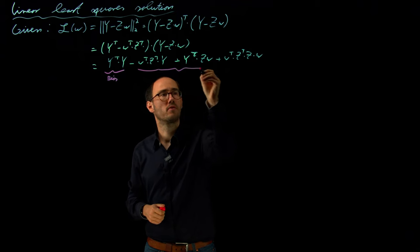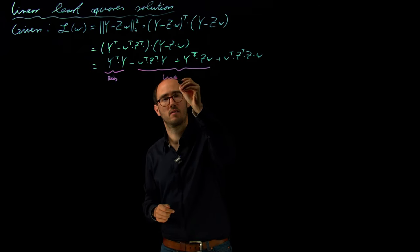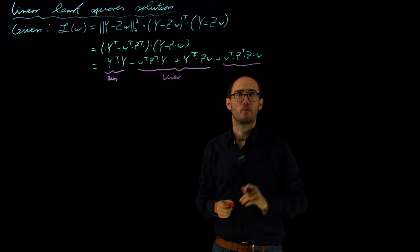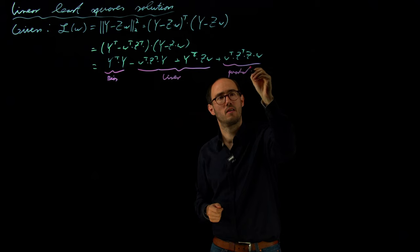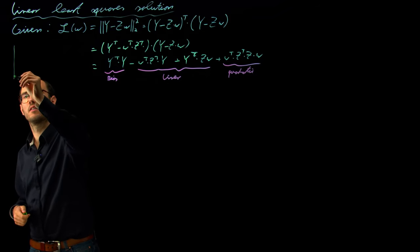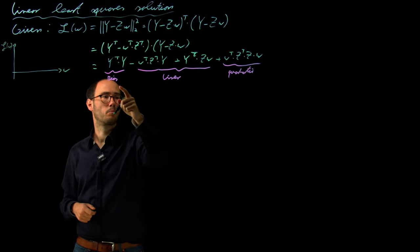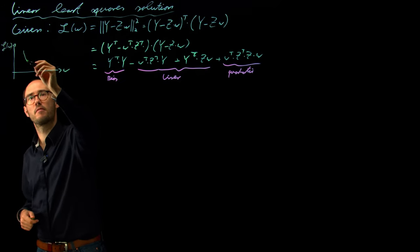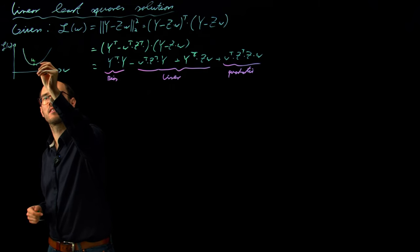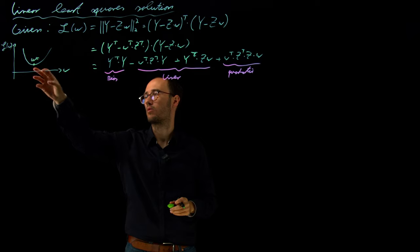Then these two terms have w transpose from the left-hand side and w from the right-hand side, so these are linear terms with respect to w. And this last term with w transpose on the left and w on the right appears to be a quadratic term in the cost function. So if we visualize the cost problem with a scalar w and the loss of w, the bias, linear, and quadratic terms basically produce a convex quadratic cost function, and we are interested in finding w star, the parameter vector which minimizes this loss.